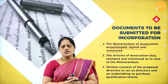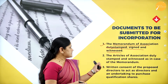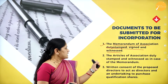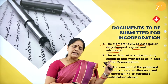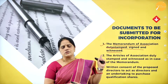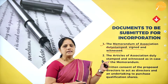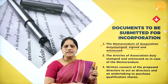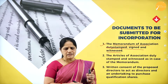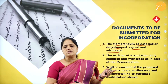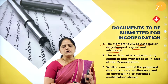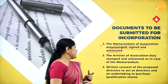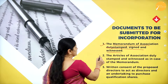The next document to be submitted for incorporation is the Articles of Association. This should also be duly stamped and witnessed, as in the case of the Memorandum of Association. For a public company, they can follow Table A, and in lieu of that, instead of producing the Articles of Association, they can also issue a prospectus in lieu of the Articles of Association.